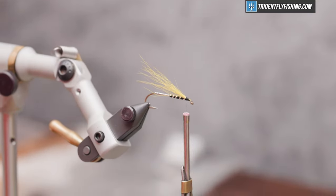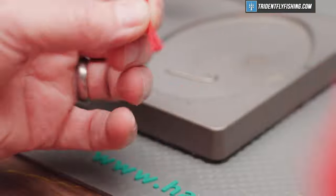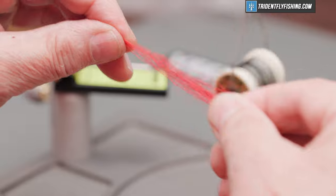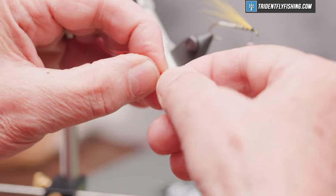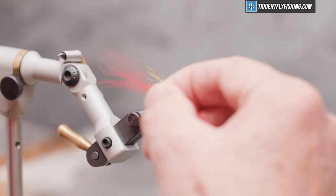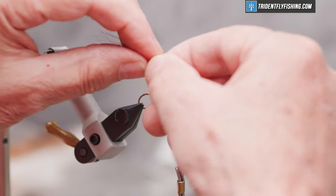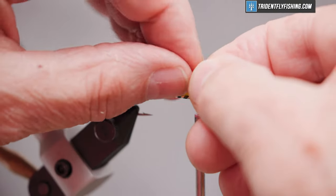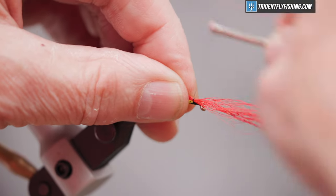The next color is red. Same thing, not too much. Sometimes it's easier to stack this in your hands than in a stacker because it's so twisty and just doesn't stack. That's about where we want it, the same length as the yellow. Tie it in right on top.